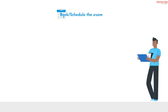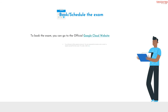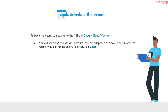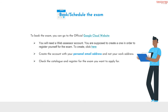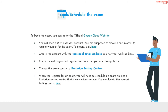Schedule the exam. If you are determined enough to go for this exam and become a certified Google Data Engineer, then it's time to register for the exam and go ahead for the preparation. Following are the steps to apply: first, you will need a web assessor account — create one to register for the exam; second, create the account with your personal email address and not your work address; third, check the catalog and register for the exam you want to apply for; fourth, choose the exam center, that is, Criterion Testing Center; fifth, schedule an exam time at a Criterion Testing Center that is convenient for you.